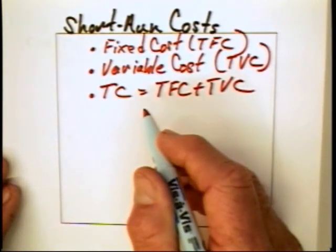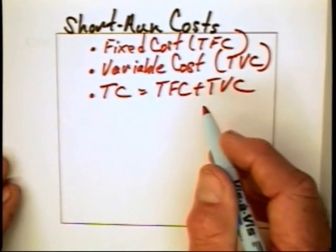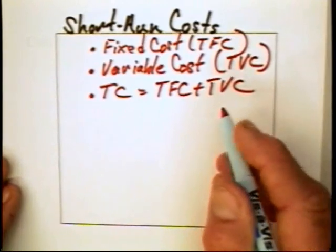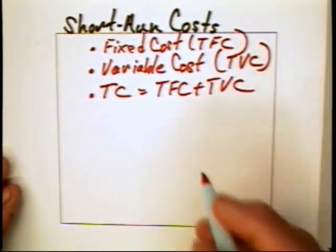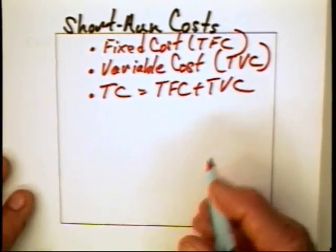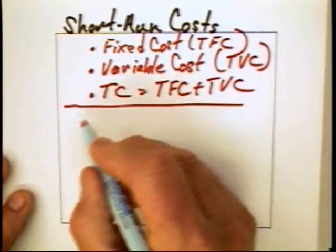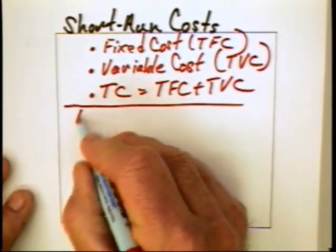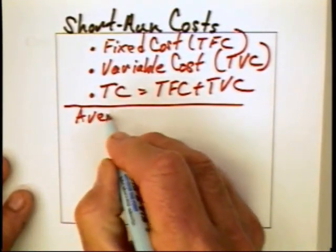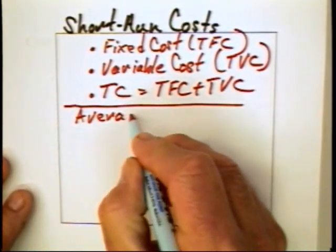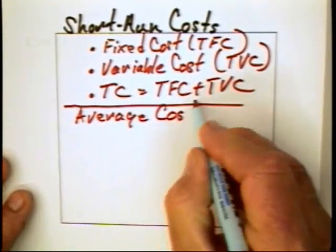We could, in fact, develop a firm's cost structure in terms of totals — total fixed cost, total variable cost, and just a total cost. But by convention, we have developed cost structures in terms of average costs.